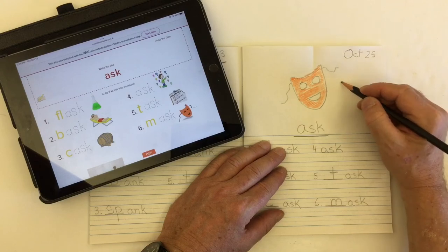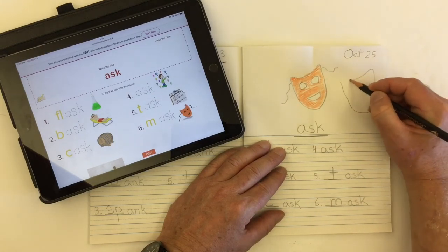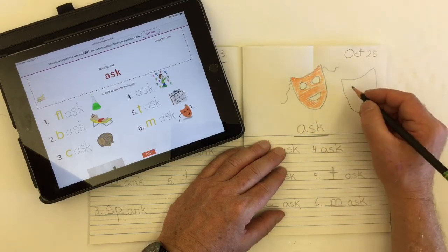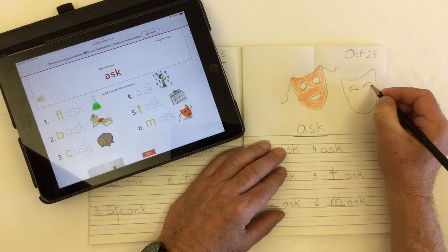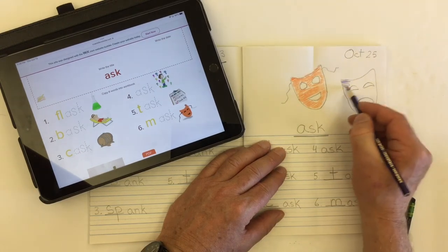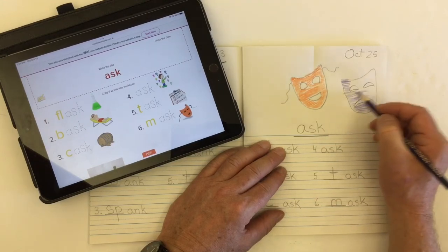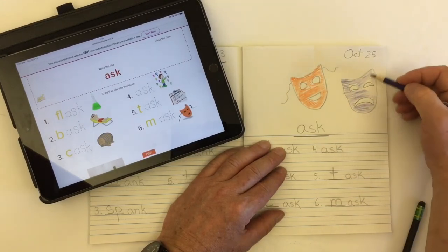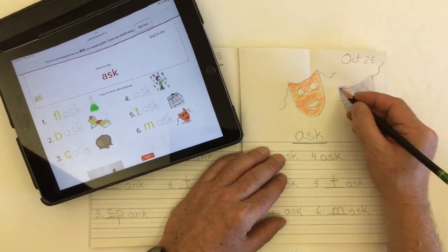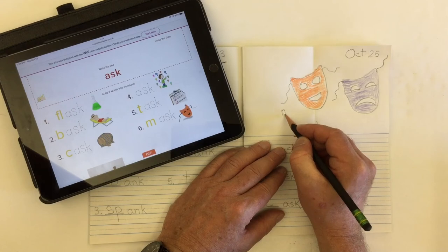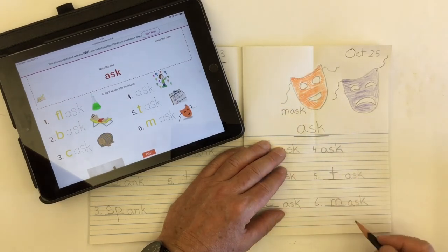In the world of drama stage performing, it's often represented by two masks, one that's smiling for comedy and one that's sad for drama. I'll label my picture as mask, same as word number six.